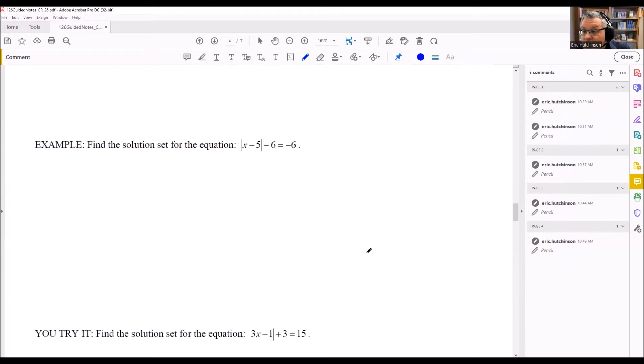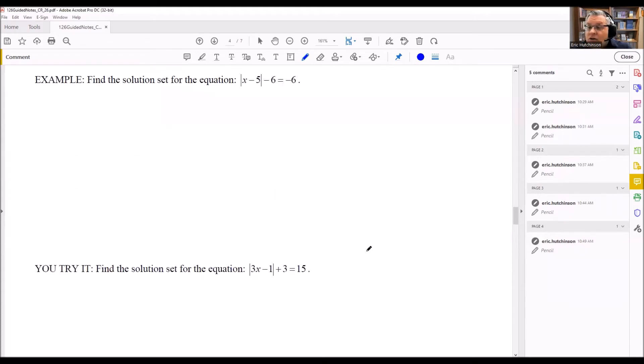So let's move on to the next case. This is another one where we want to isolate the absolute value. So we're going to add 6 to both sides, and we get absolute value of x minus 5 equals 0.